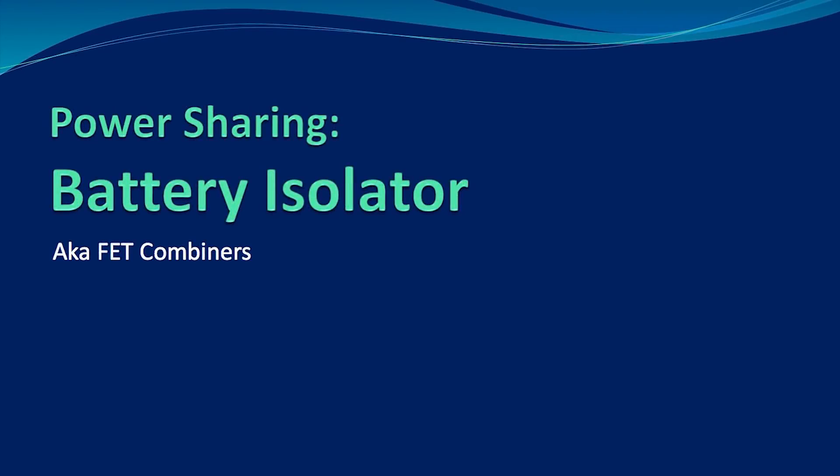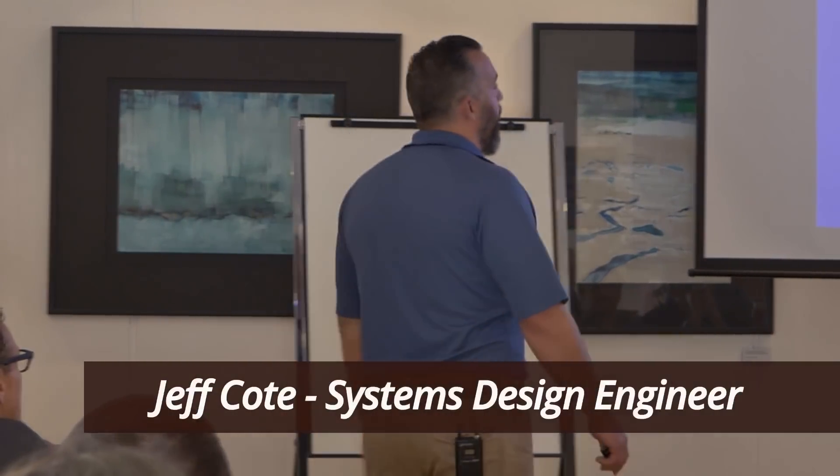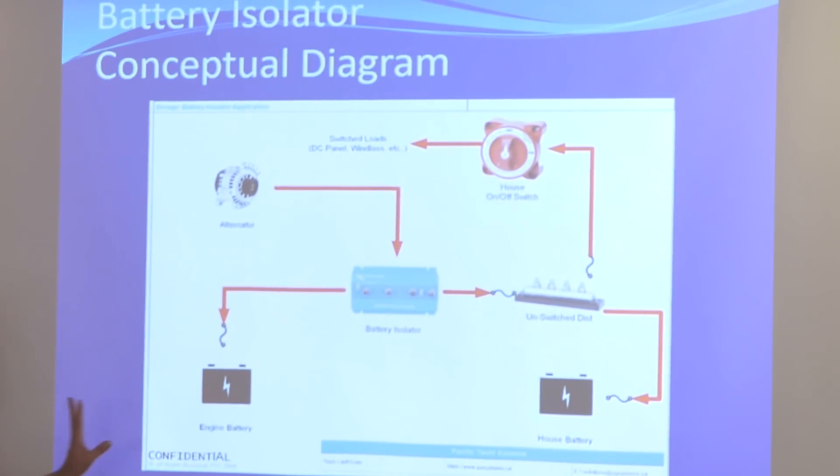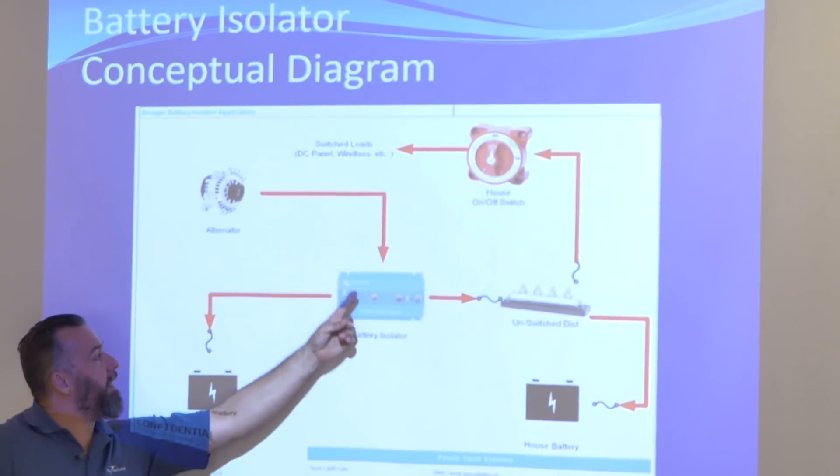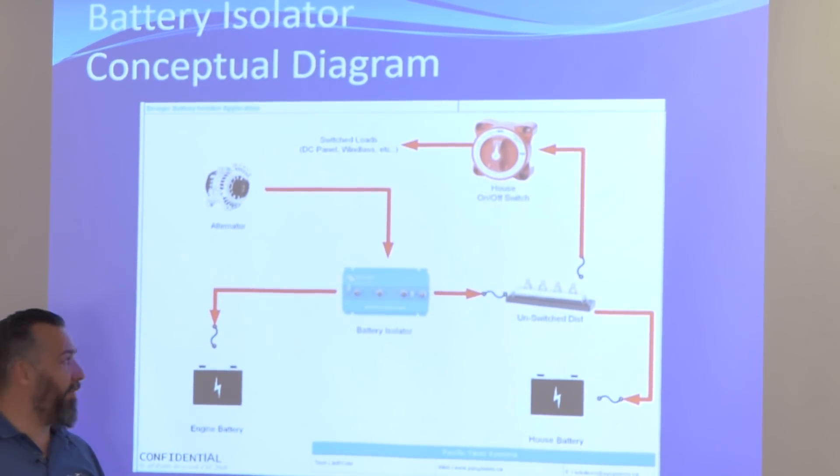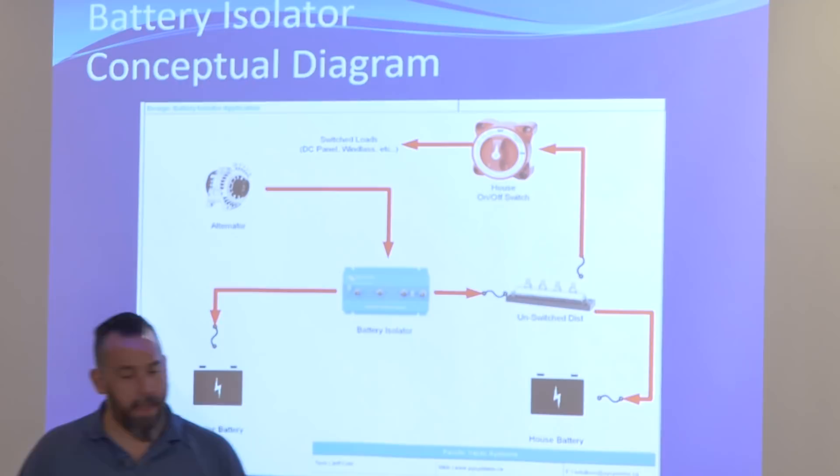All right, now this is a magical device, battery isolators. So a battery isolator for an alternator is perfect because what it does is you take it as an input and then from there it's sort of like a gate valve, a Y valve, and then it sends it to both the engine battery and to the unswitch distribution to go back to the house.